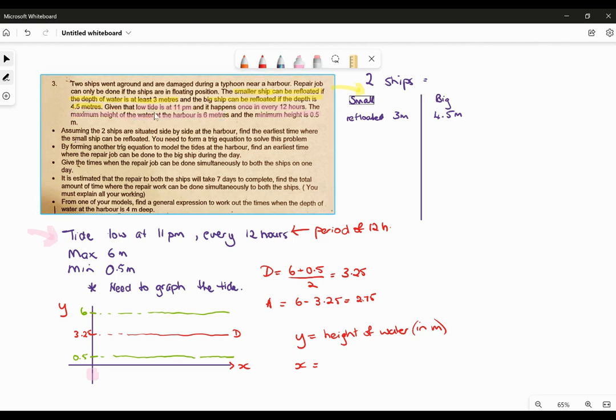Assuming that the two ships, given that the low tide is 11pm, we're talking about the height of the water. The tide is low at 11pm, and it cycles, and it repeats once every 12 hours. That means the period is 12.